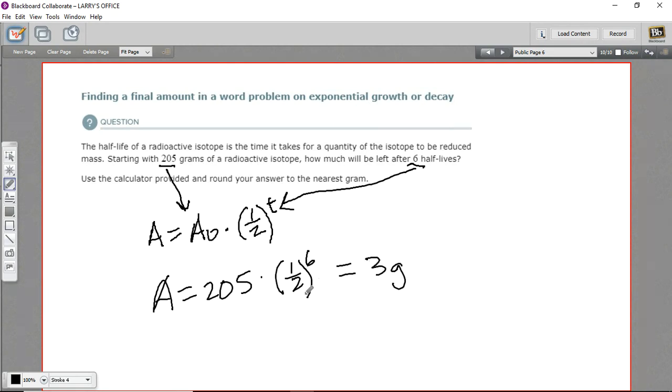Now, you could have calculated the same thing by taking 205 and dividing it in two and dividing it in two and dividing it in two and doing that six times. And in fact, if you did that, well, let's just estimate that and see if we get something close to three grams.